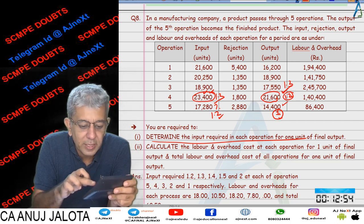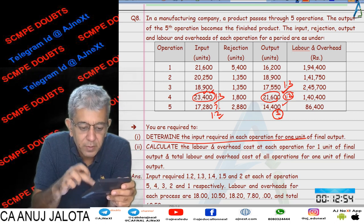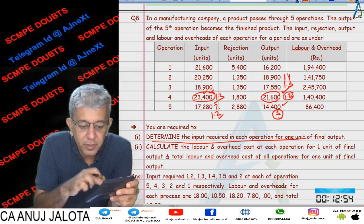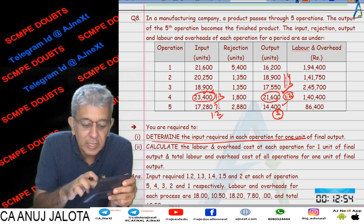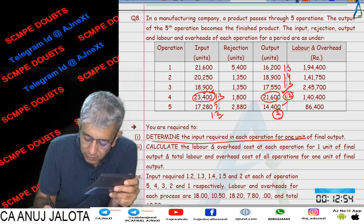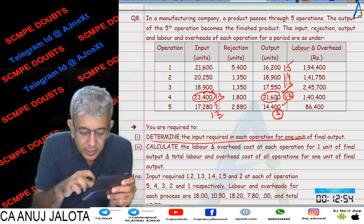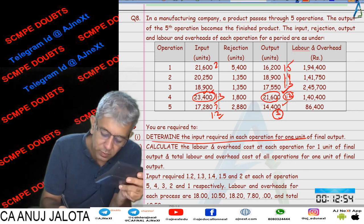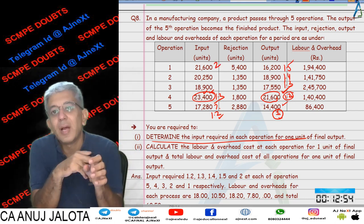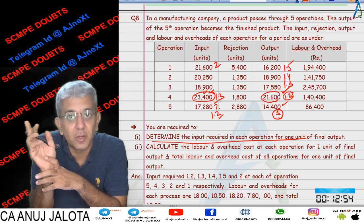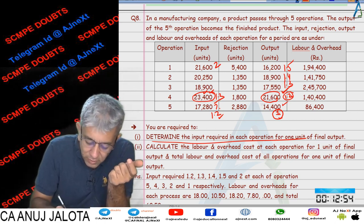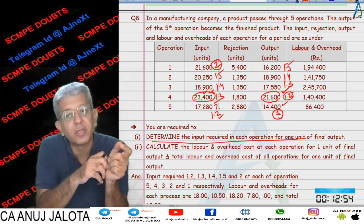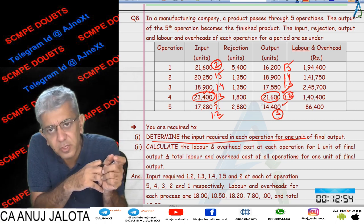Continuing backwards: 1.3 × 18900 ÷ 17550 gives 1.4. Then 1.4 × 22500 ÷ 18900 gives 1.5. Then 1.5 × 21600 ÷ 16200 gives 2. So to get 1 unit of the final output, you need to input: 2 in process 1, then 1.5, then 1.4, then 1.3, then 1.2. That answers the first part of the question.